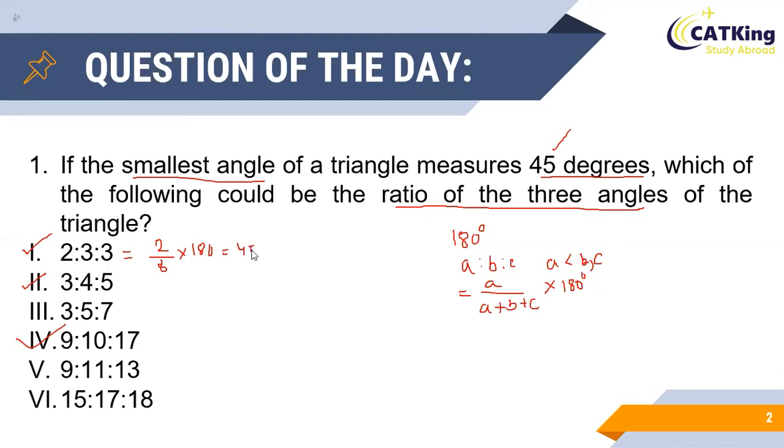In option 2, the smallest angle will be 3 divided by (3 + 4 + 5), which is equal to 12, times 180 degrees, which is again equal to 45 degrees.